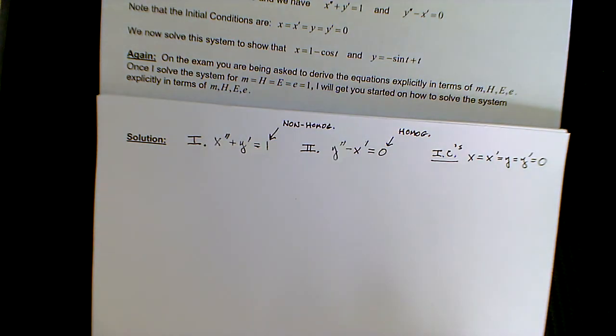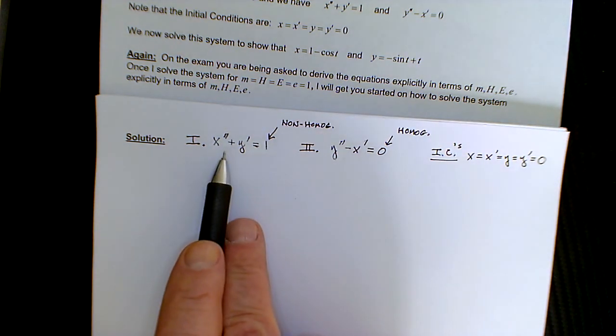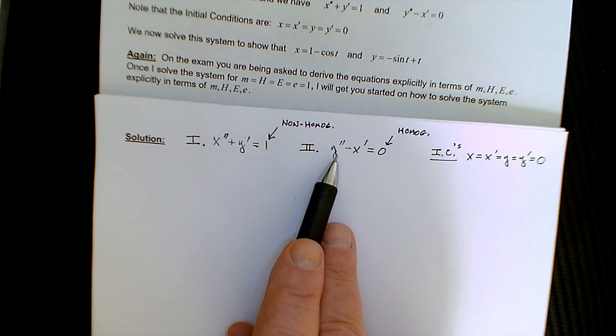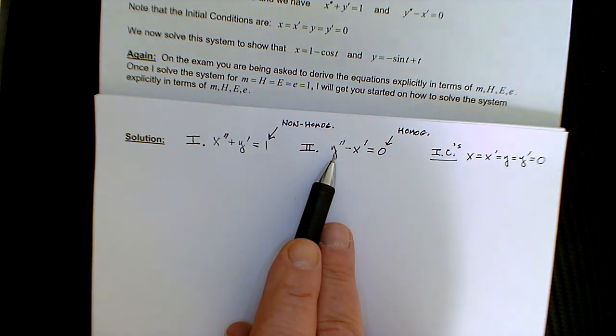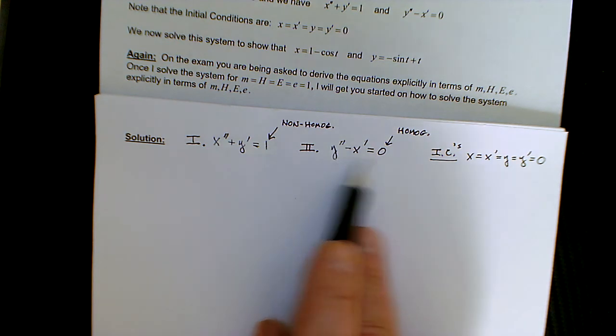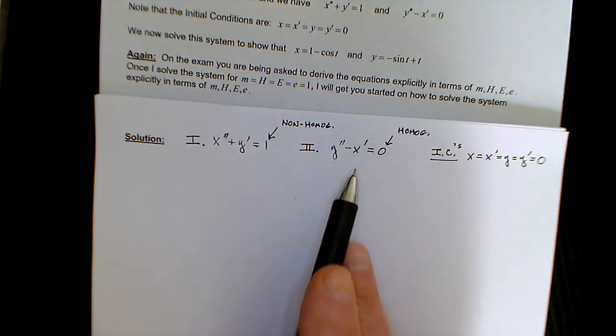Now, what we're going to do is we're going to solve this system by basically taking this first equation and solving for y prime, finding its derivative, and then substituting into this second equation. So if we have y double prime in terms of x now from this equation, we'll be able to substitute into this equation, and we'll have an equation in terms of x and the derivatives of x.